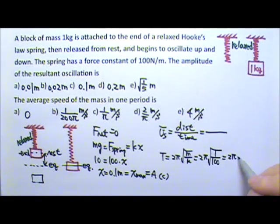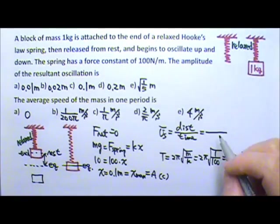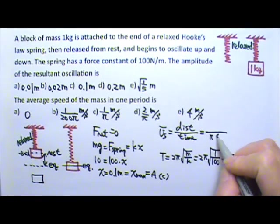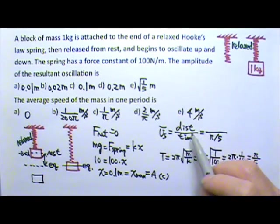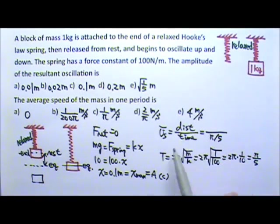So this gives us 2π times 1/10, which is π/5. So the time is π/5. And what's the distance traveled in one period?